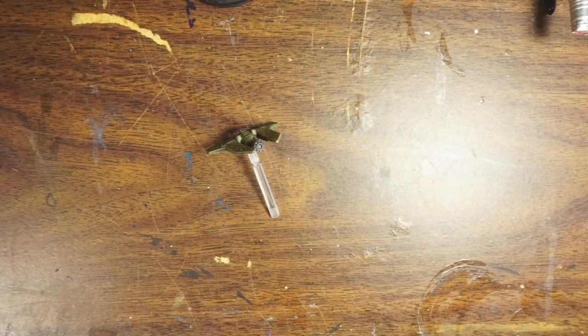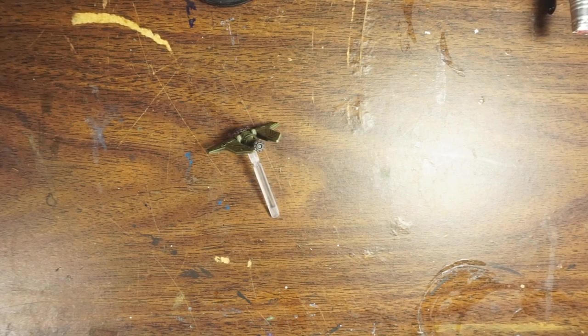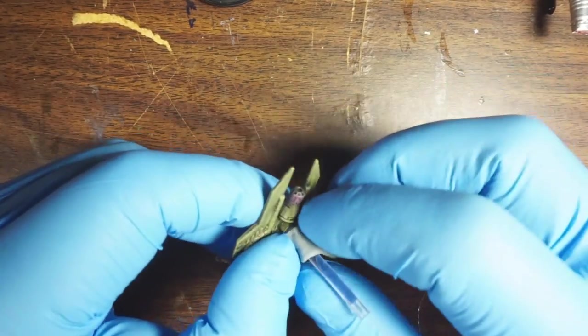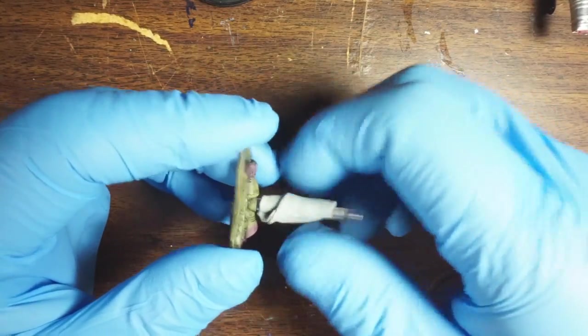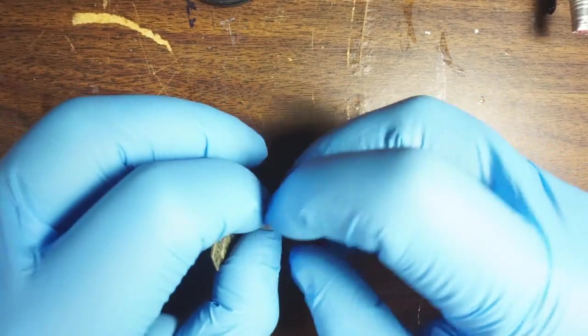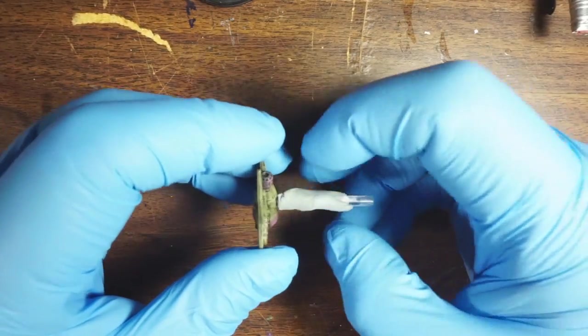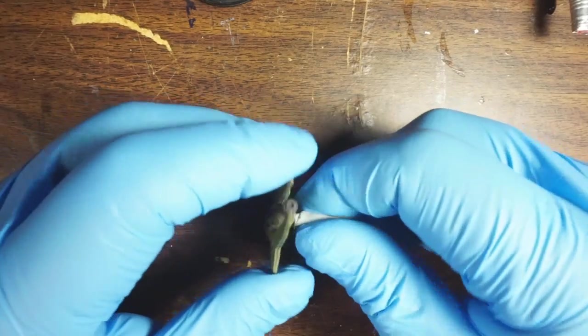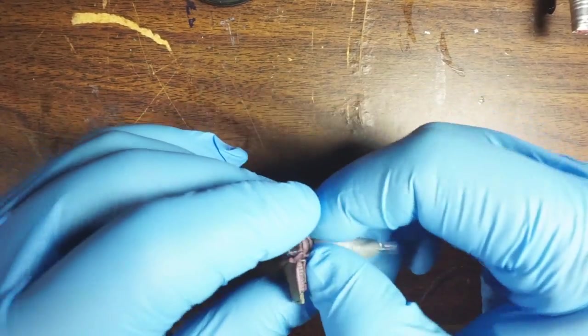The first thing I'm going to do is mask off the little base here using poster tack. It's like that blue stuff or white stuff or gray stuff that you can get at stationers for holding posters. It doesn't really work very well for that purpose, but as a masking material it's not too bad.